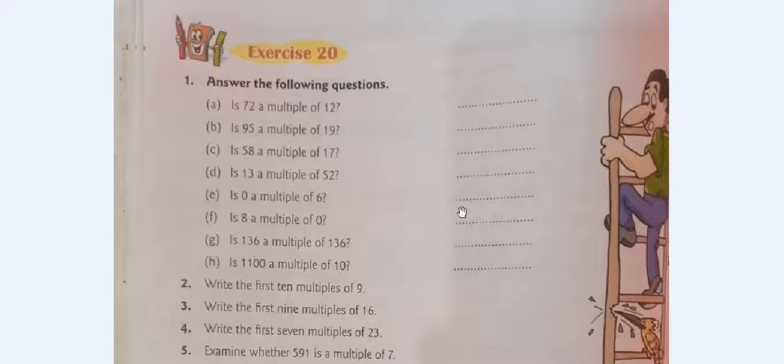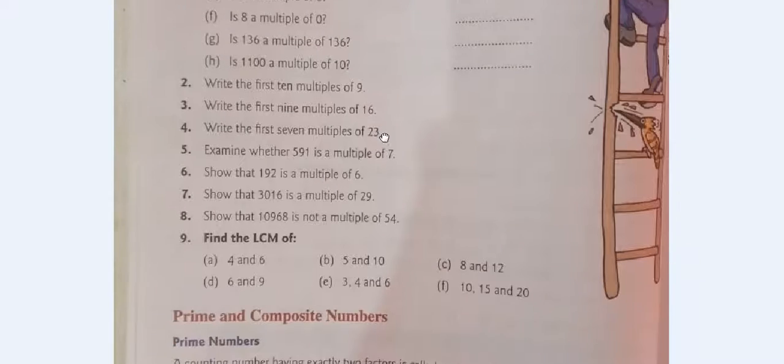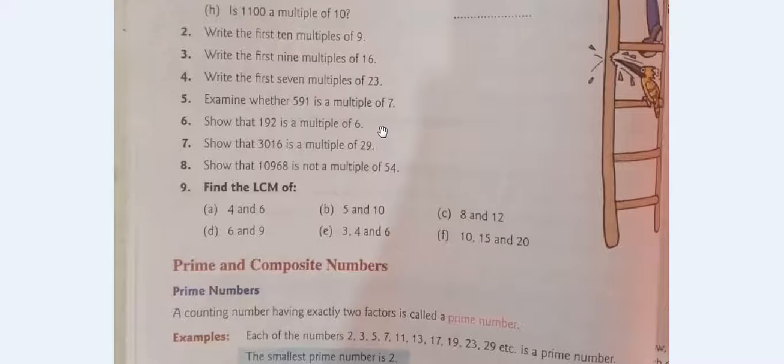Class 4 composite maths exercise number 20. We have already done from question number 1 to 8. Today we will do question number 9: find the LCM. LCM means least common multiple or lowest common multiple.